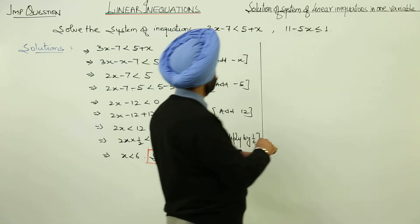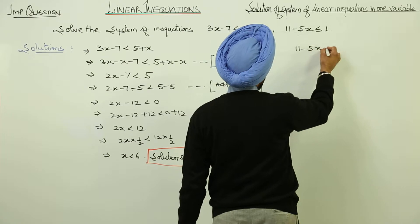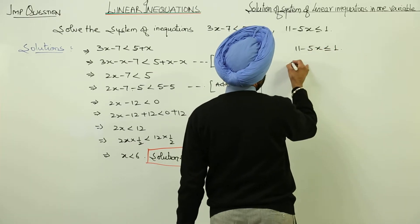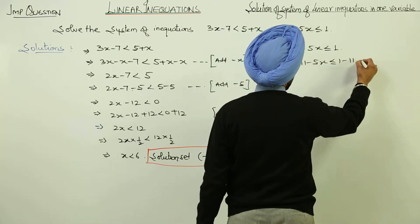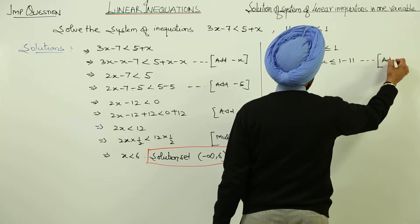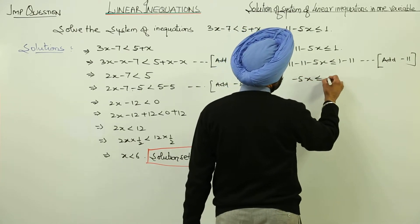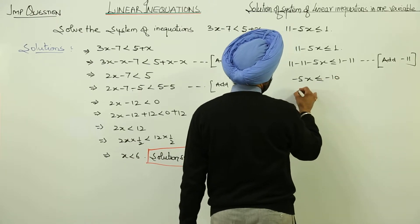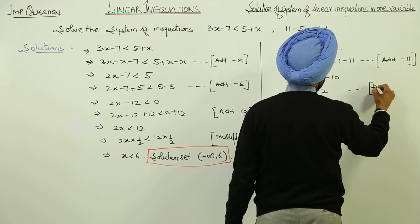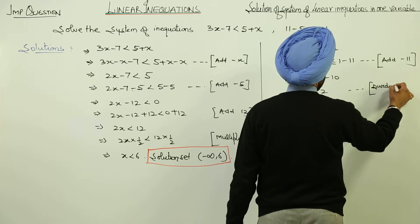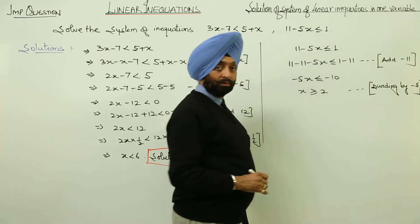Now let us go for the second equation. The second equation is 11 minus 5x is less than or equal to negative 1. Subtracting 11 from both sides, negative 5x is less than or equal to negative 10. Dividing by negative 5, we get x is greater than or equal to 2.